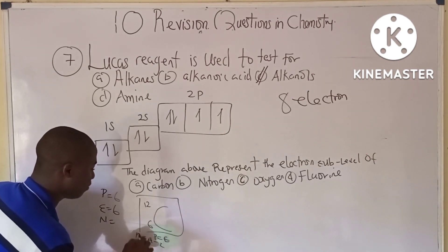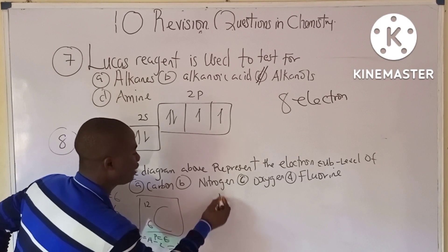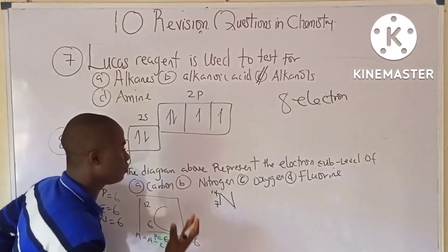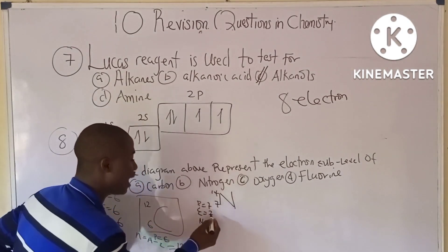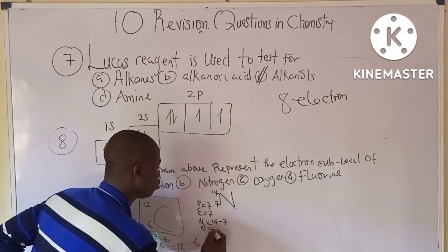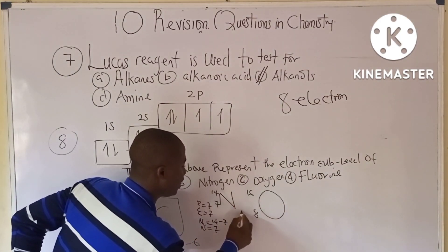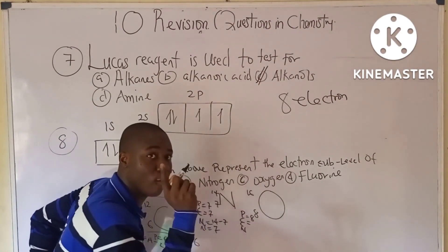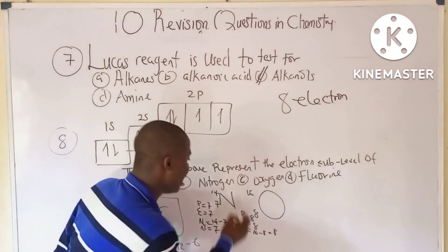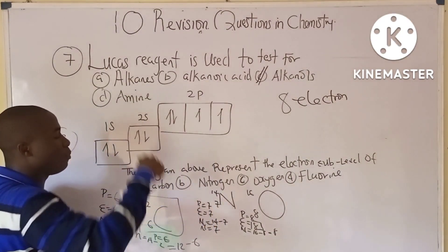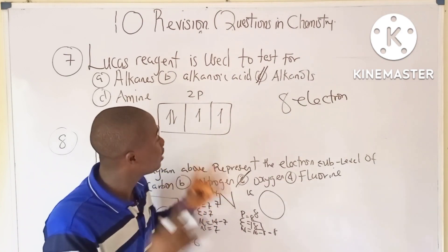Nitrogen has atomic number 7, so its electron number is 7 — does not match. Oxygen has atomic number 8, so its electron number is 8, which matches our count of 8 electrons. Therefore, the diagram represents oxygen.